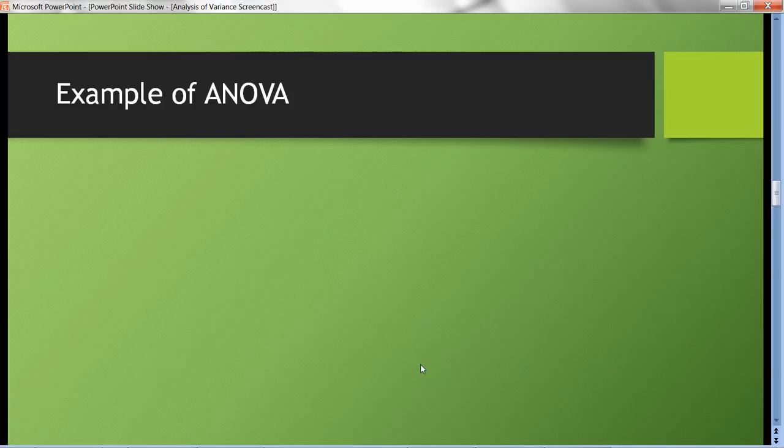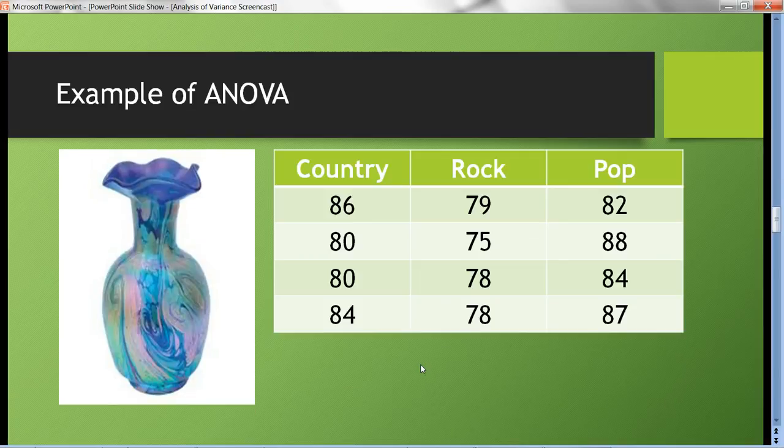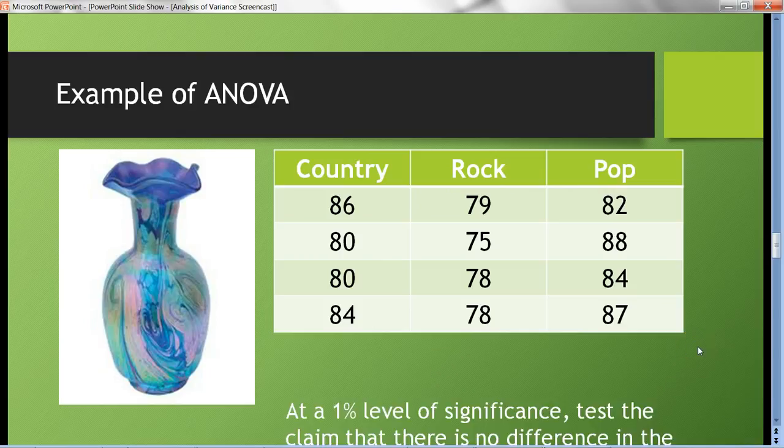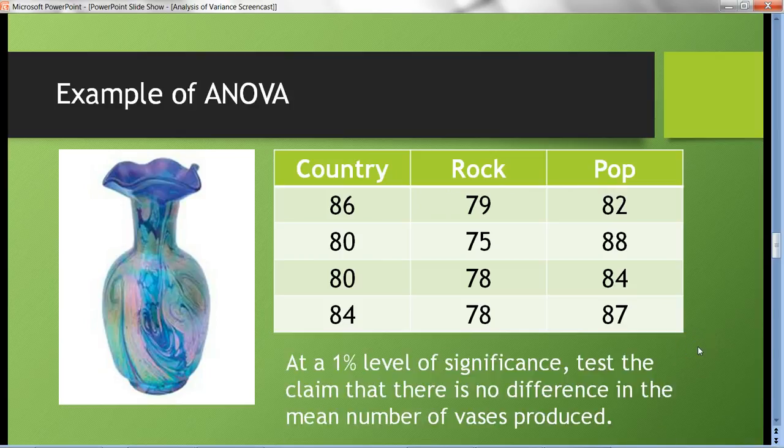Let's take a look at the data. Notice four days country music was played: 86 vases made, 80 on another sample day, 80 on the third sample day, and so forth. They did that with all three genres for randomly selected days. At a 1% level of significance, test the claim that there is no difference in the mean number of vases produced.